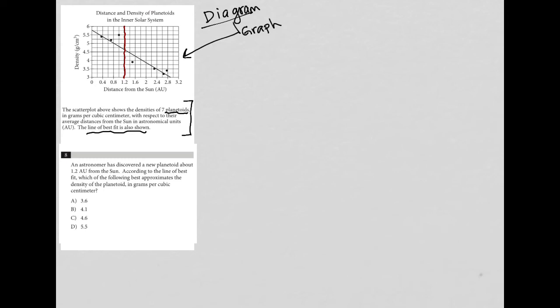According to the line of best fit, which of the following best approximates the density of the planetoid in grams per cubic centimeter? According to the line of best fit, our point would be right there. And that point corresponds with just about, this would be 4.75, which means we're just under that. So looking at the answer choices, the only one that makes sense here would be 4.6, which is answer choice C.